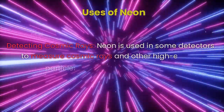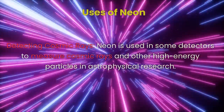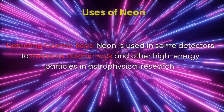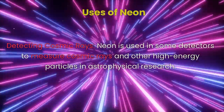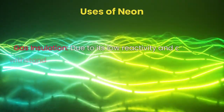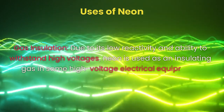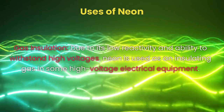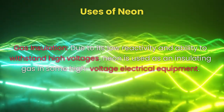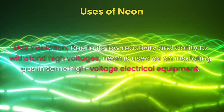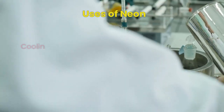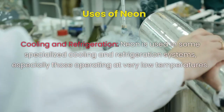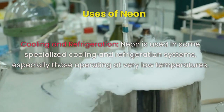Detecting Cosmic Rays: Neon is used in some detectors to measure cosmic rays and other high-energy particles in astrophysical research. Neon is also used as an insulating gas in some high-voltage electrical equipment, and in some specialized cooling and refrigeration systems, especially those operating at very low temperatures.